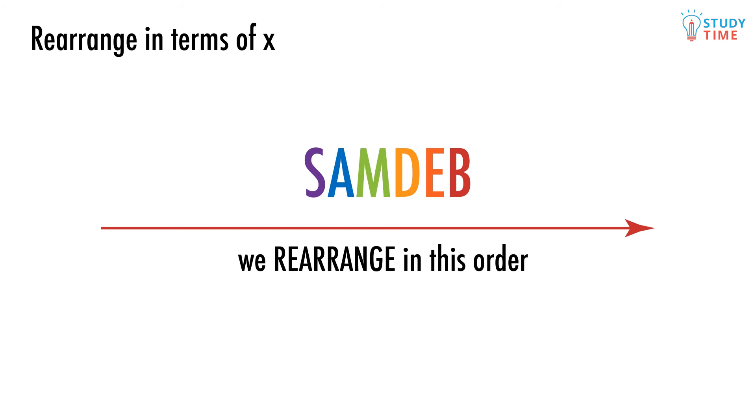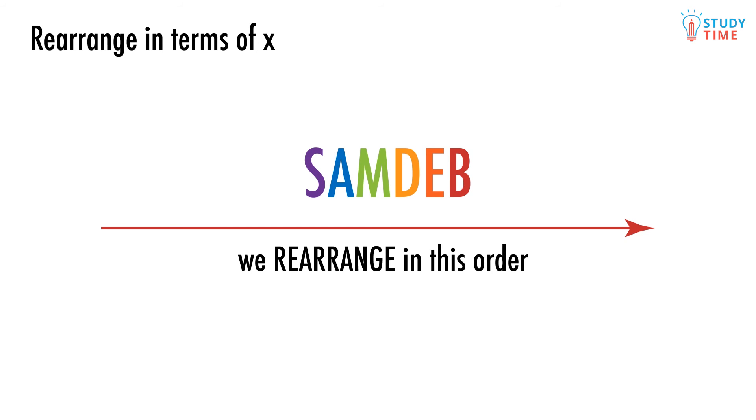Go figure. Let's say we have this equation - we want to rearrange it so that it's in terms of x instead of y. In other words, we want to rearrange it so that it says y equals something x instead of x equals something y. Let's remember the order we rearrange in: SAMDEB. Let's go. Subtraction and addition are done first. See that plus 4? We can move it to the right hand side by subtracting 4 from both sides of the equation.